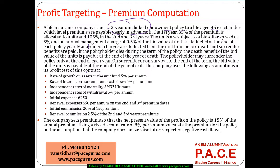If the policyholder dies during the term, the death benefit is the bid value of units payable at the end of the year of death — there is no additional benefit, so there is no extra cost borne by the insurance company. On surrender or survival to end of term, the bid value of units is payable at the end of the year of exit, so again there is no additional loss.